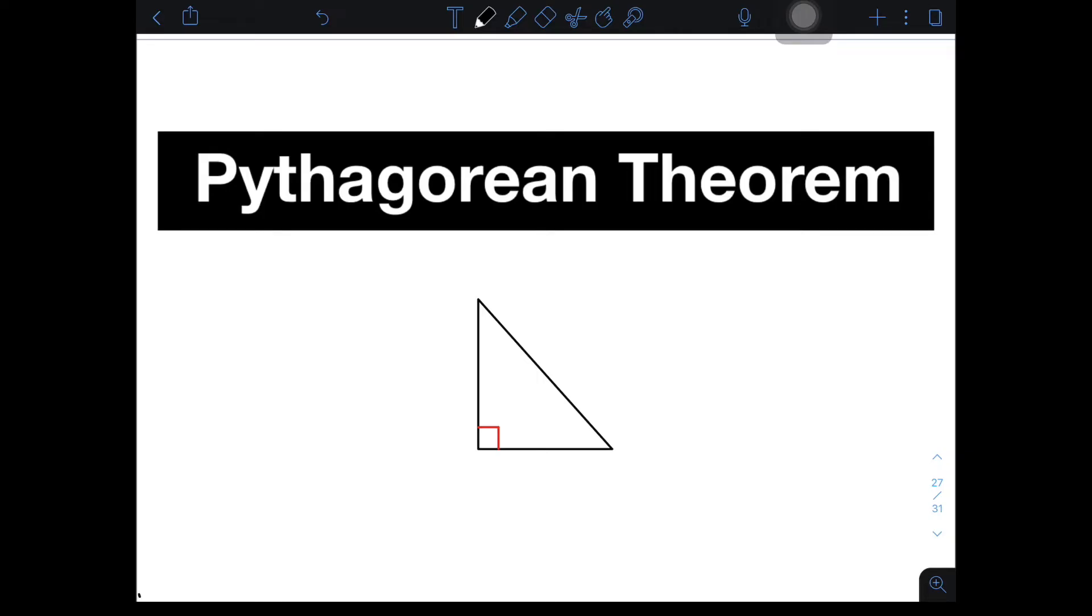At ihit mo na rin yung bell button for you to be updated sa ating mga latest uploads. Again, I'm teacher Gon. Let's do this topic. We have here a right triangle wherein pag sinabi natin right triangle, ang pinaka-notation nito or pinaka-matatandaan natin dito is that meron siyang isang angle that measures exactly 90 degree. And ito yung mismo ating 90 degree angle. Itong red box na ito. This one indicates that the measurement of this angle is 90 degrees.